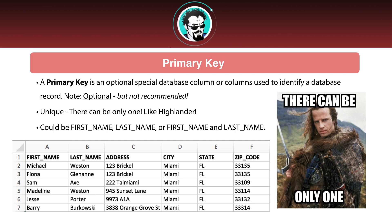Looking at our database table, the primary key could be first name or last name, or even first and last name combined. The problem is, if we're building up this table we'll probably find that Michael and Sam are fairly common names, so we'd hit a conflict quickly. Even combining first and last names won't work for long — my name is John Thompson, and there are a lot of John Thompsons in the world, so that approach would fail fast.